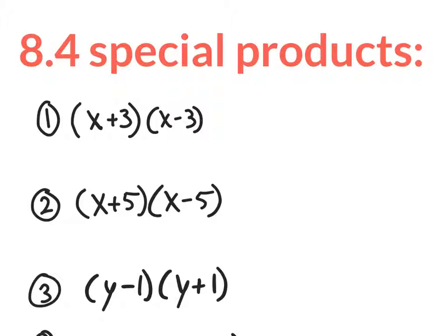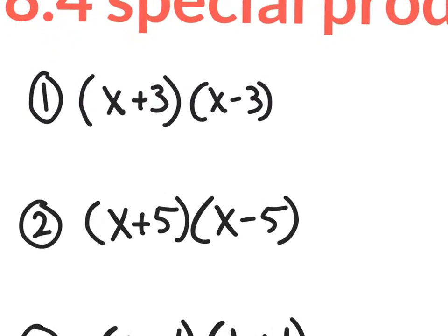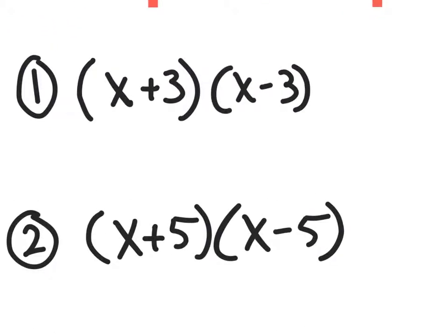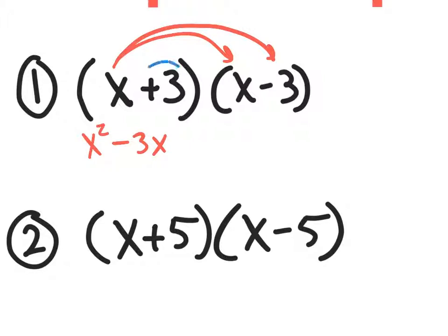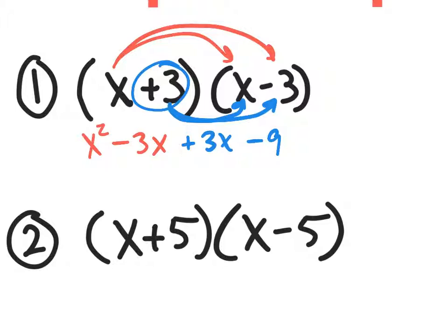When they do happen, you could notice a certain pattern which will provide a shortcut. Let's go through questions and do them the normal way until somebody comes up with a shortcut. When I go x times x, I get x squared. x times negative 3 gives negative 3x. Then 3 times x gives positive 3x, and positive 3 times negative 3 gives negative 9. The middle terms cancel out because they're exact opposite values, so the answer is x squared minus 9.